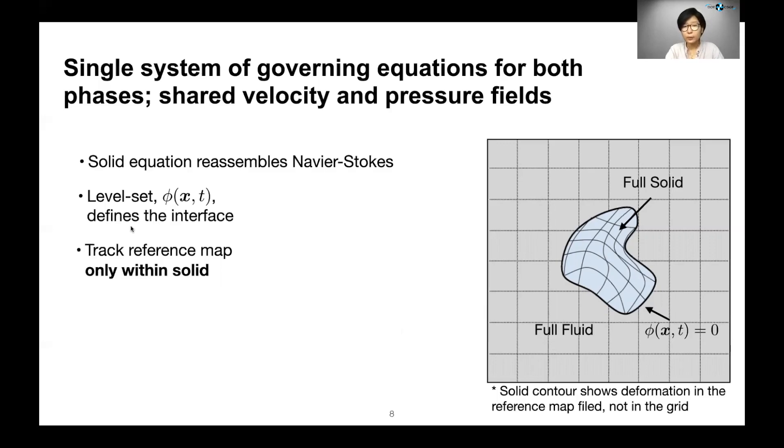First, we need to define the fluid-solid interface. And for that, we use the zeroth contour of a level set function. And next, we only define reference map variables within the solid, but not in the fluid, to avoid excessive distortion in the underlying field.